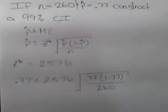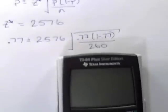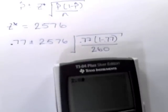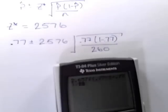We type this into the calculator: 2.576 times the square root of 0.77 times one minus 0.77, divided by 260.